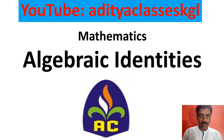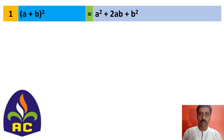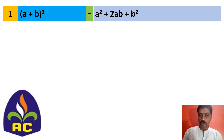Here is your first algebraic identity: a plus b, the whole square, you can write it as a squared plus 2ab plus b squared. I hope you are ready with your notebook and a pen and writing them down.